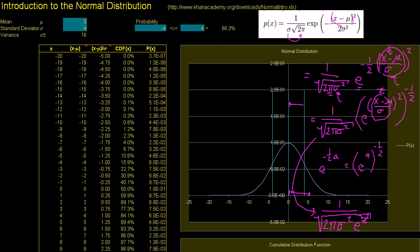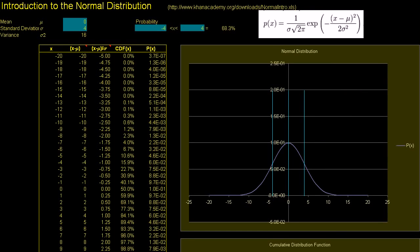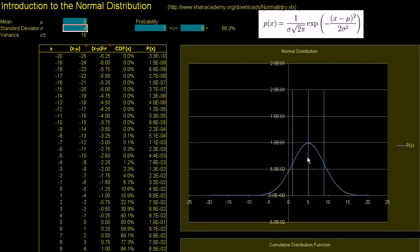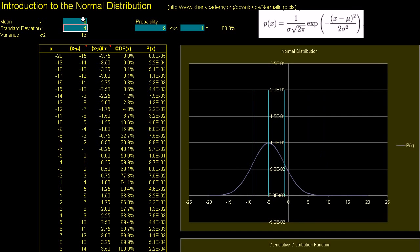Let's play around with this normal distribution in the spreadsheet. I've plotted the normal distribution, and you can change the assumptions in the green-blue cells. Right now it's plotted with a mean of 0 and a standard deviation of 4. What happens when you change the mean? If the mean goes from 0 to 5, notice the graph just shifts to the right by 5 — it was centered here, now it's centered over here. If we make it minus 5, the whole bell curve just shifts 5 to the left.